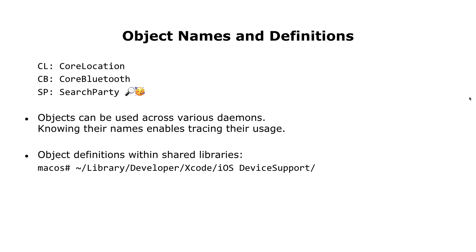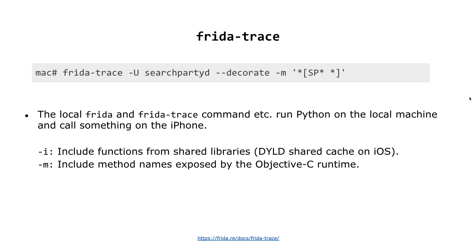Some of the object definitions are in shared libraries and they follow a naming scheme: CL is CoreLocation — everything from the CoreLocation framework. CB is CoreBluetooth — everything from Bluetooth. And then AirTags use SP — SearchParty. I don't know how many AirTags you need for a search party, but apparently you cannot pair more than 16 AirTags with one iPhone. When using Frida trace, the -i flag is for native functions and exported symbols, while -m is for the Objective-C runtime.